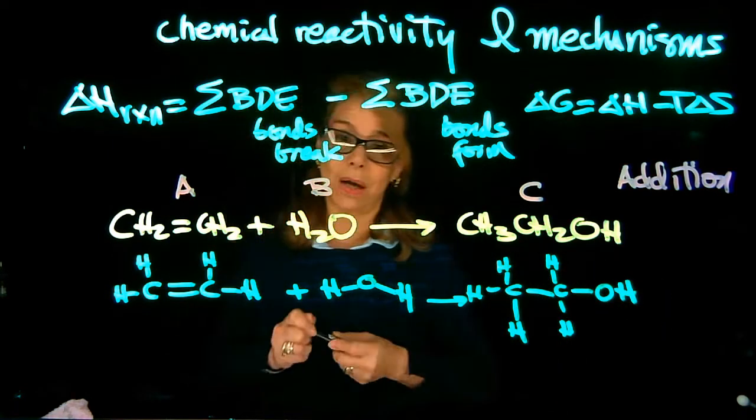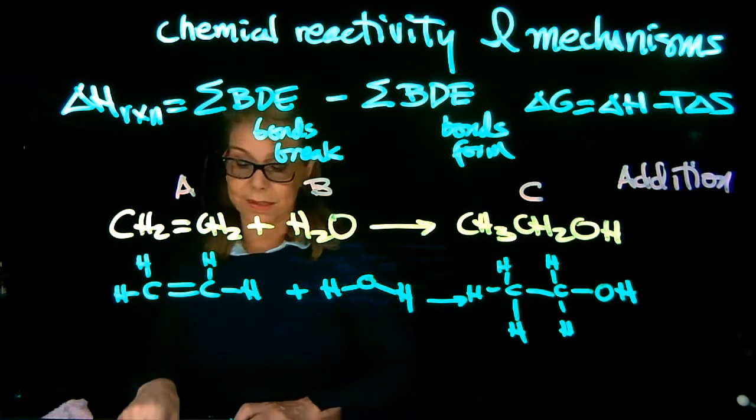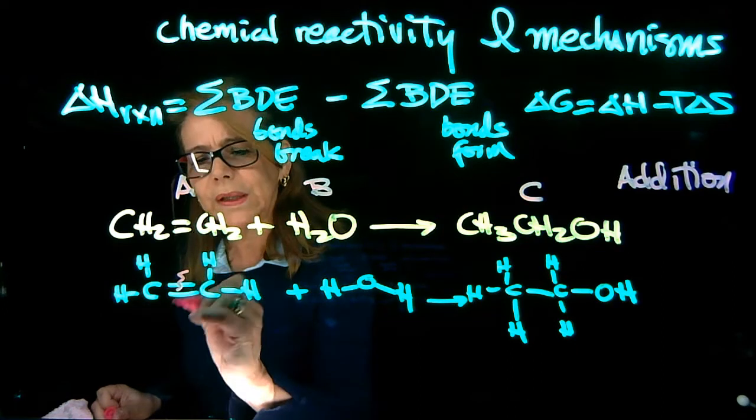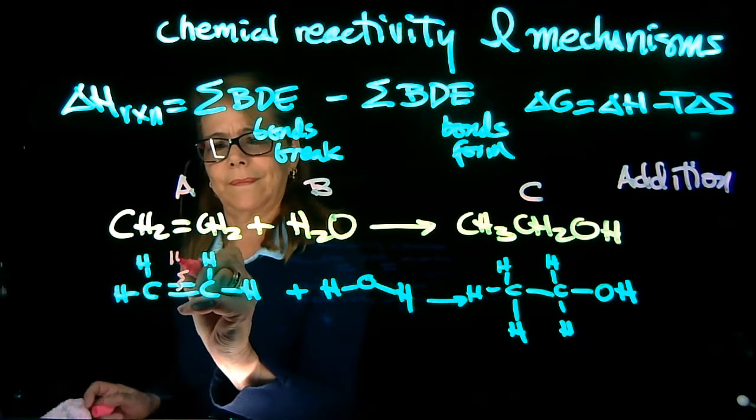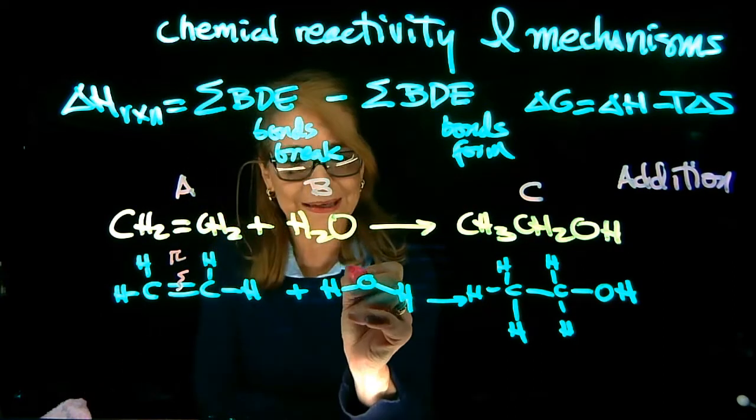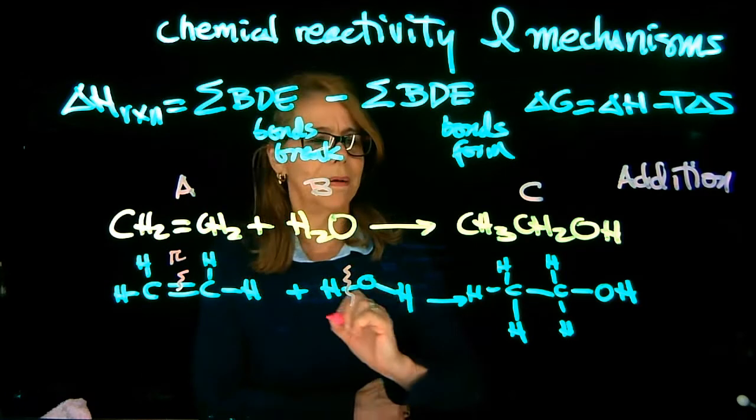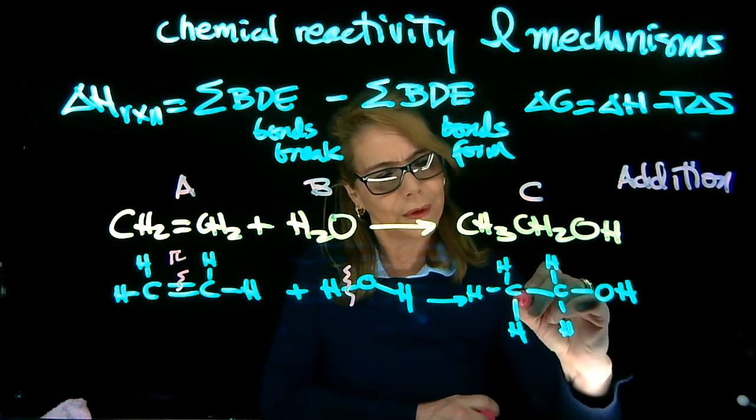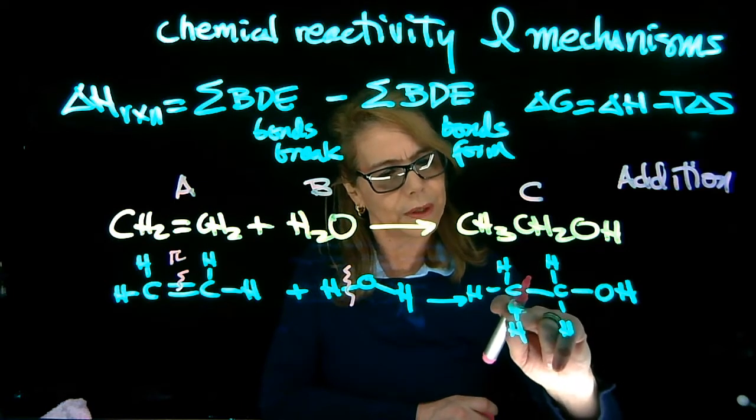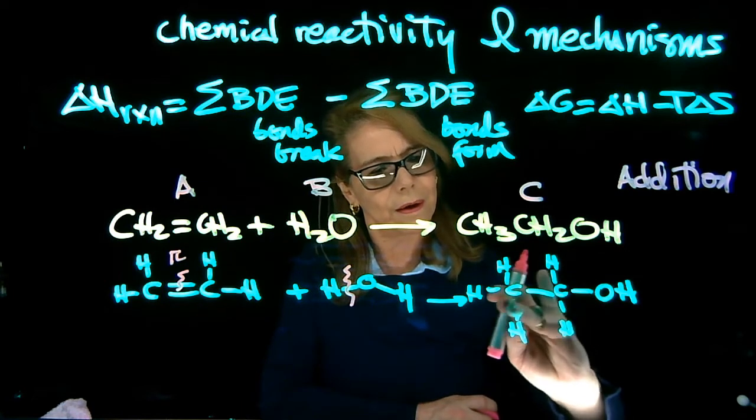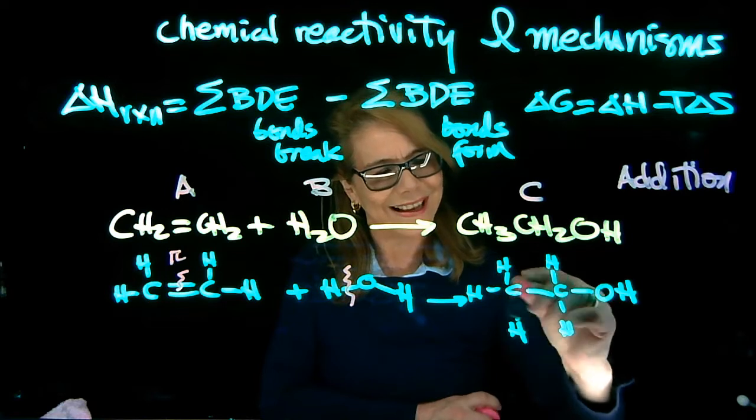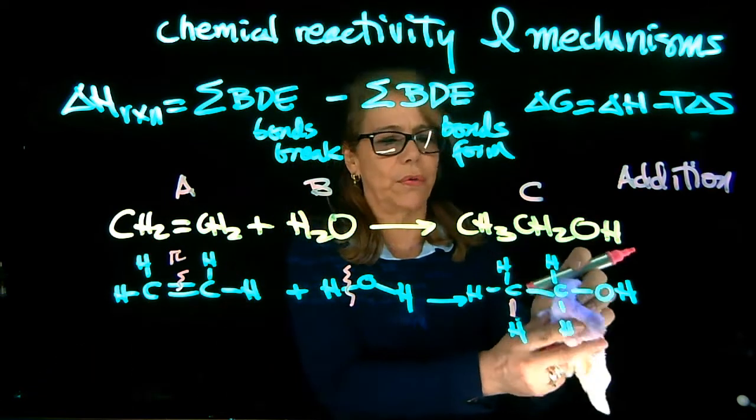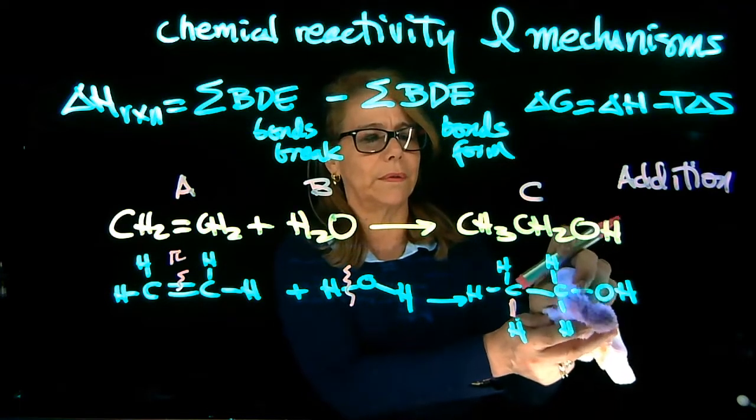So let's identify the bonds that we're breaking and the bonds that we form. Here, you're breaking only the pi bond, and you're breaking one of these bonds, and you're forming two new bonds, so this one is new.